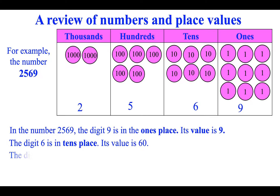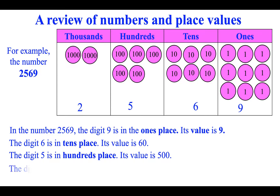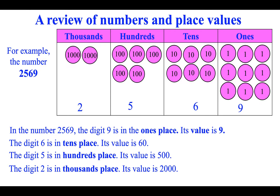The digit five is in the hundreds place; its value is five hundred. The digit two is in the thousands place; its value is two thousand.